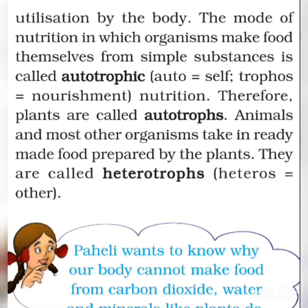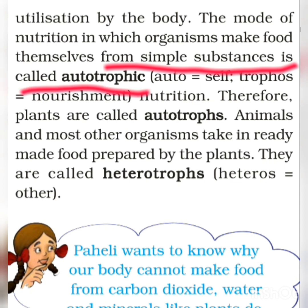There are two types of modes of nutrition: autotrophic and heterotrophic. First, autotrophic. The mode of nutrition in which organisms make food themselves from simple substances is called autotrophic nutrition. 'Auto' means self and 'trophs' means nutrition.